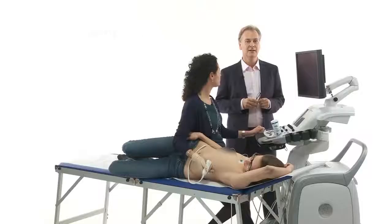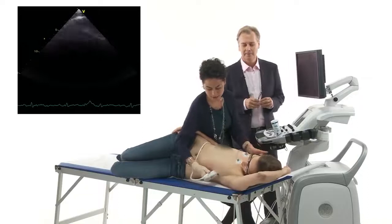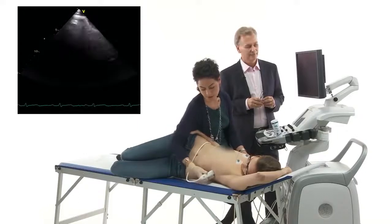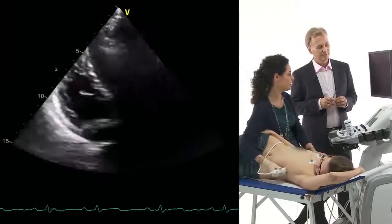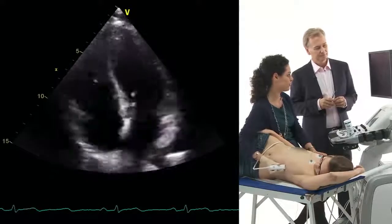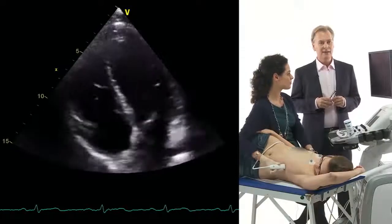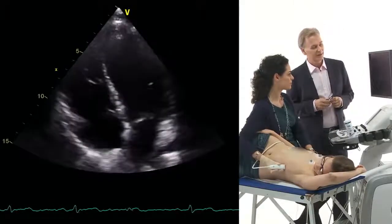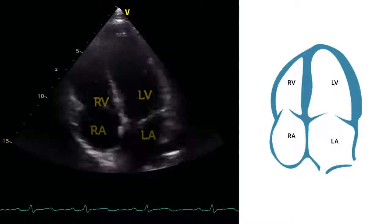The four-chamber view is probably the most important view in echocardiography — it gives us so much information. Anna, show us how to get such a four-chamber view. So my patient is almost lying on her back. I ask her just to turn a bit on her left and I put the transducer here on the fourth, fifth intercostal space. The marker is pointing really lateral and really easy — a nice four-chamber view, apical approach. This is a very nice four-chamber view. Why is it called a four-chamber view? Because you see four chambers: we have the left ventricle, the right ventricle, and both atria are visible.